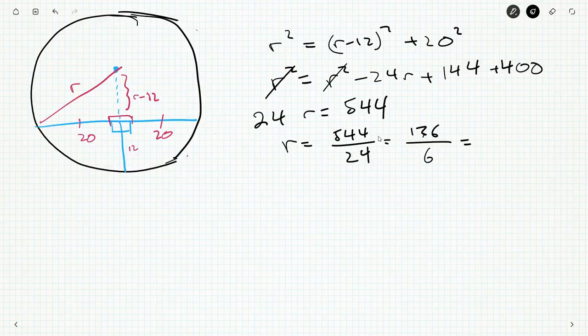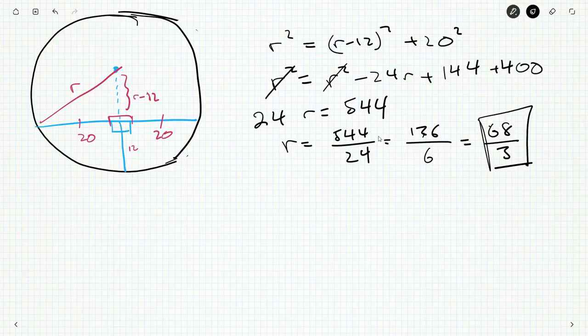And get 73? No, 68. 68? Yeah, 68 over 3. And that's as low as it's going to go. So 68 thirds is the radius.